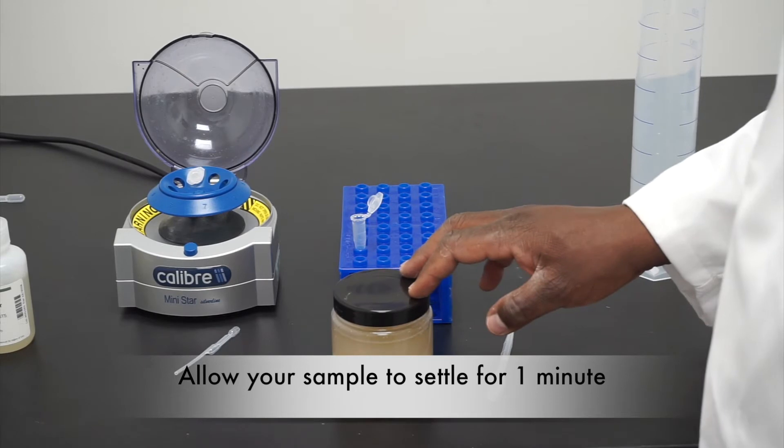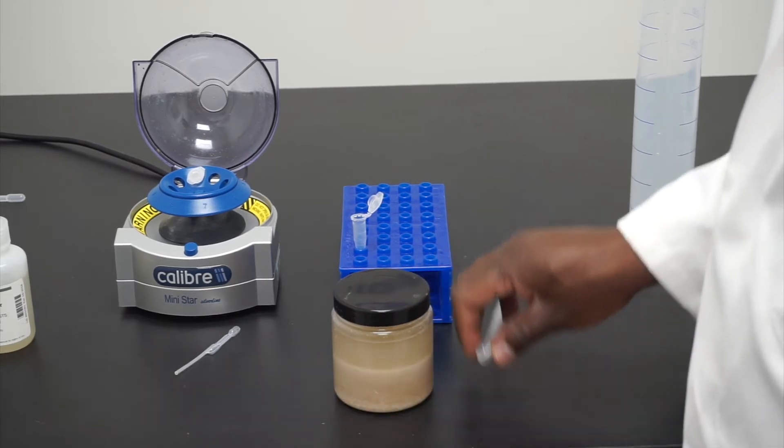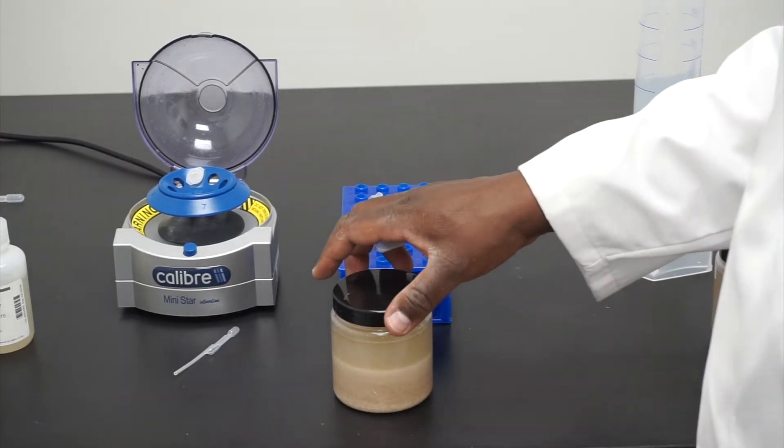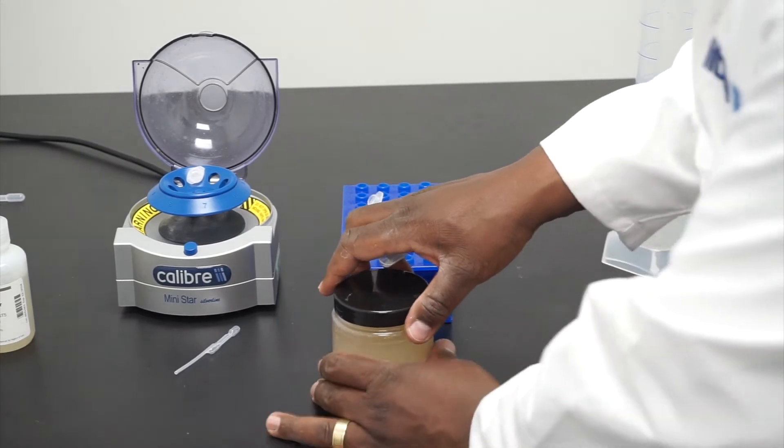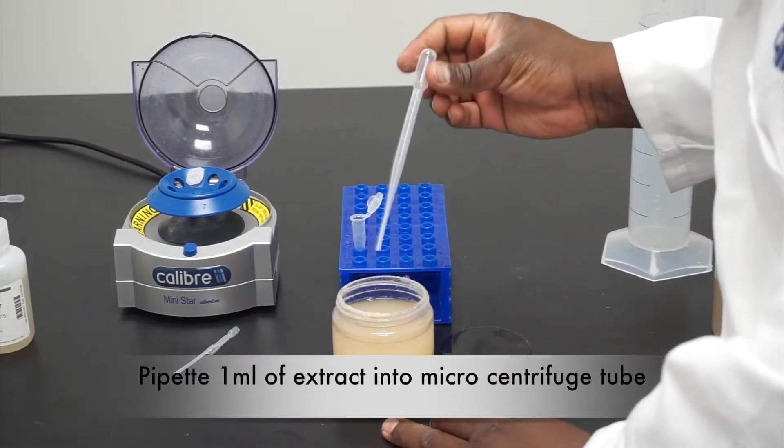After allowing your sample to settle for a minute, dispense between one milliliter and one and a half milliliters of the extract into a microcentrifuge tube.